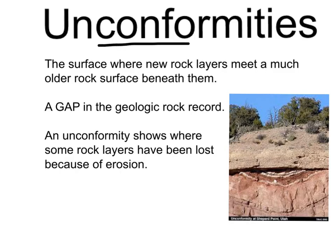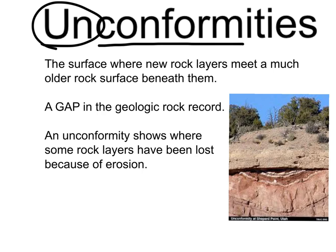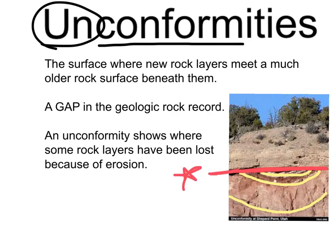An unconformity — let's look at the root word: 'conform' means following the pattern, and 'un-' means you do not follow the pattern. In geology, an unconformity is the surface where new rock layers meet a much older rock surface beneath them — it's a gap in the geologic rock record. An unconformity shows where some rock layers have been lost because of erosion. In the photograph, you can see bent or folded rock layers in a U shape, and then where younger rocks are placed on top — that highlighted area is your unconformity.